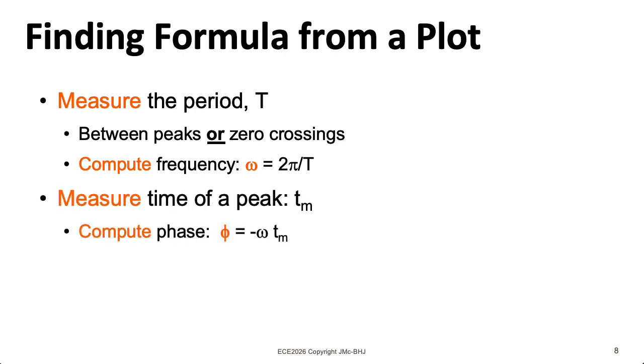Then you can compute the frequency in radians from this formula of 2π divided by T. Then you could measure the time of one of the peaks and then compute the phase using this formula phi equals minus omega times tm.